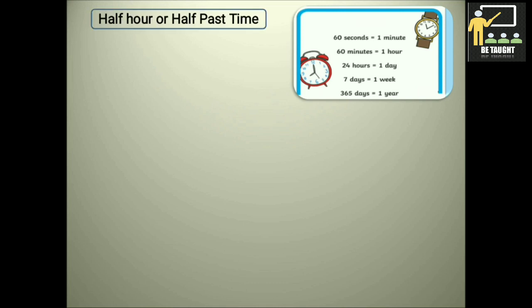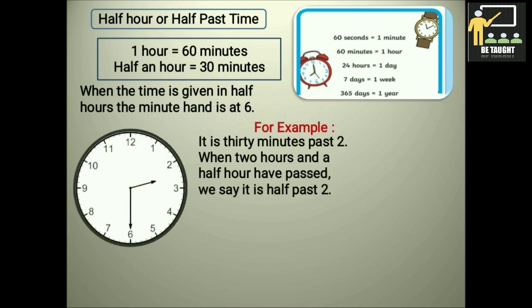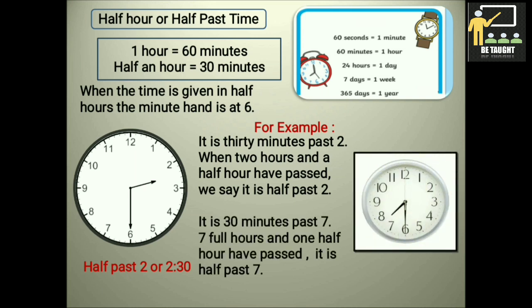Half hour or half past time. How to read that on a clock? 1 hour is equal to 60 minutes which we learned just now. Half an hour is equal to 30 minutes, means it is the half of 60. So when the time is given in half hours, the minute hand is at 6. Let us see few examples to understand this. It is 30 minutes past 2. When 2 hours and a half hour has passed, we say it is half past 2 or 2:30. We will see one more example. It is 30 minutes past 7. 7 full hours and 1 half hour have passed. It is half past 7 or 7:30.